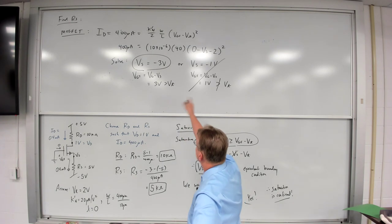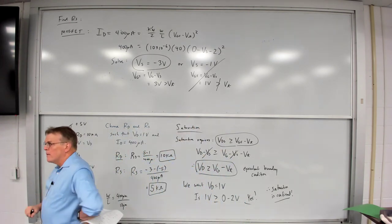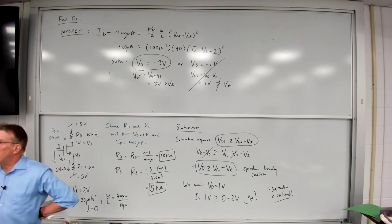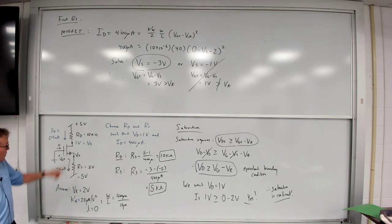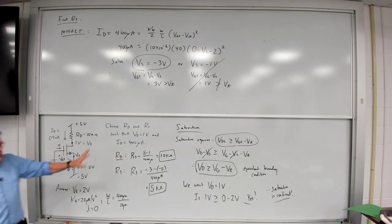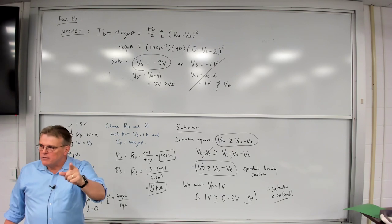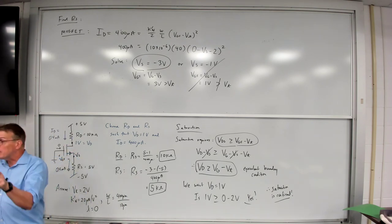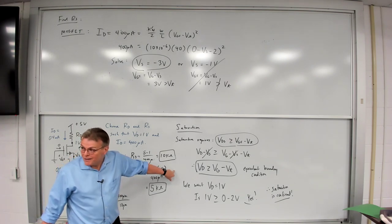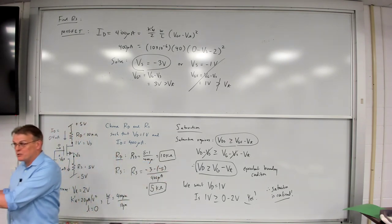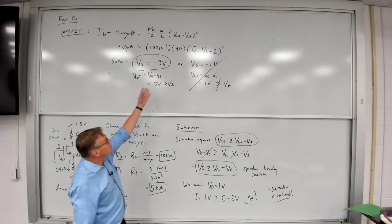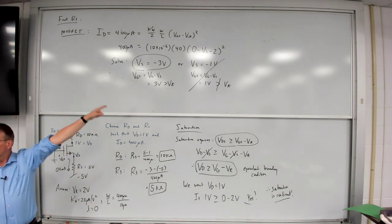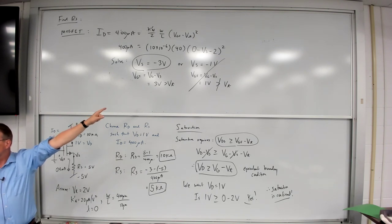We know it's in saturation because VD > VG − VT. So the triode-saturation boundary condition doesn't come into play here. The boundary condition I needed to check was the cutoff boundary condition — whether VGS > VT — in order to identify which of the two quadratic solutions was valid.